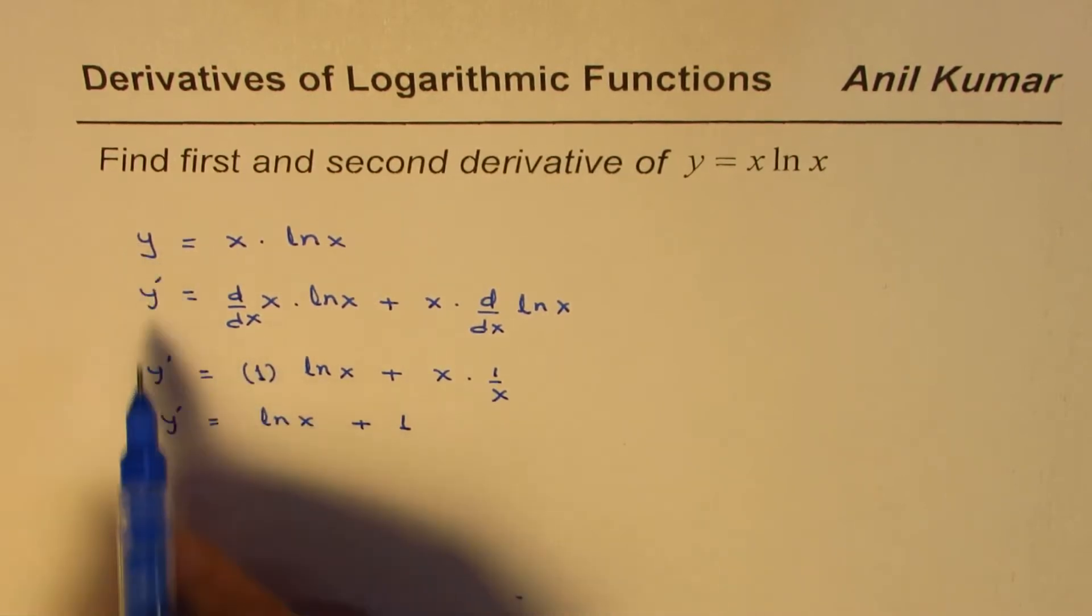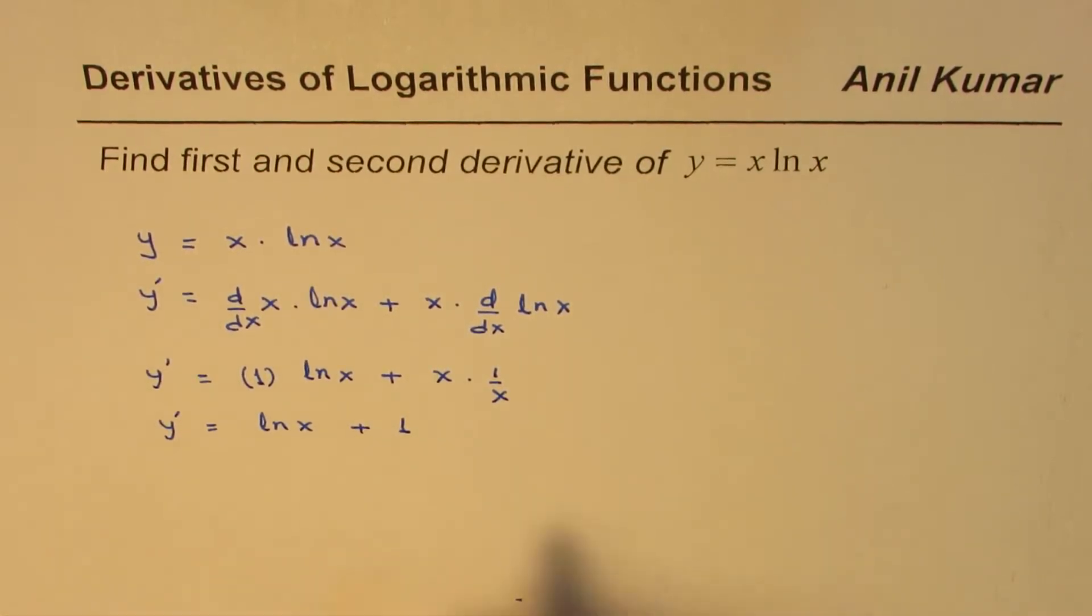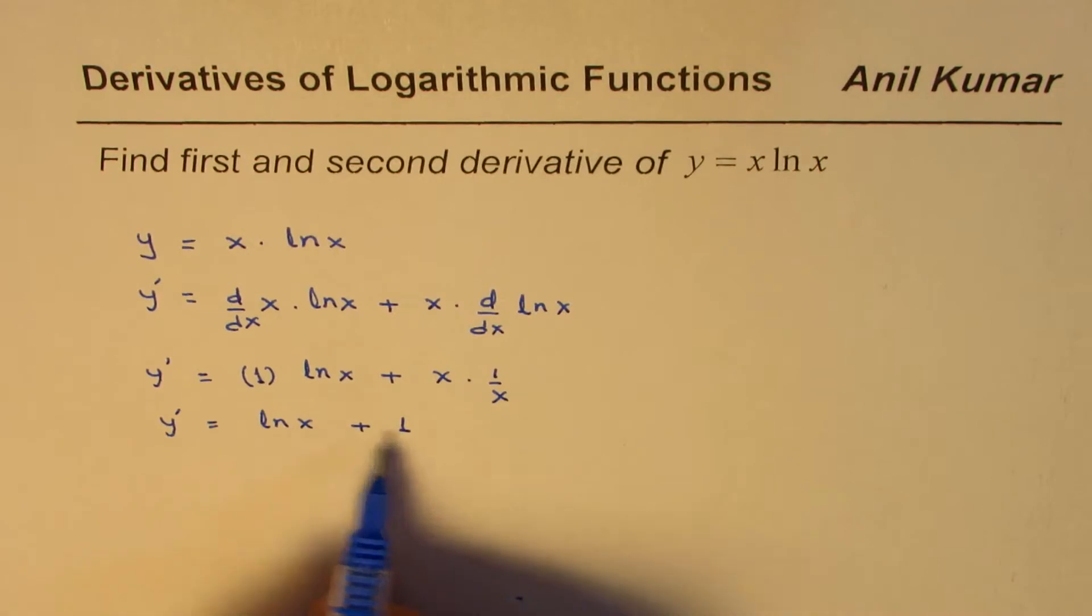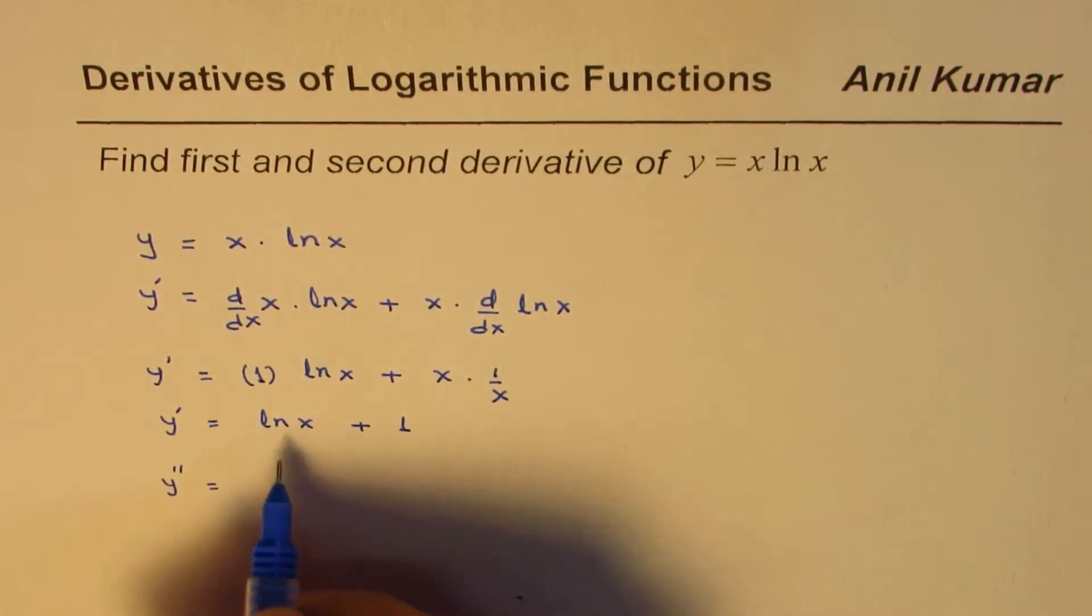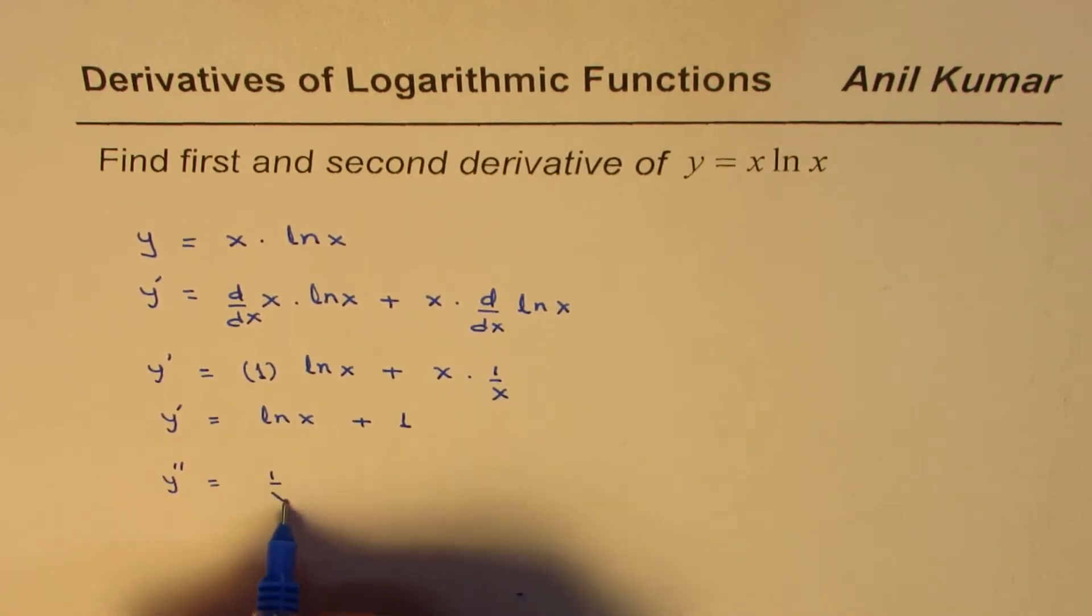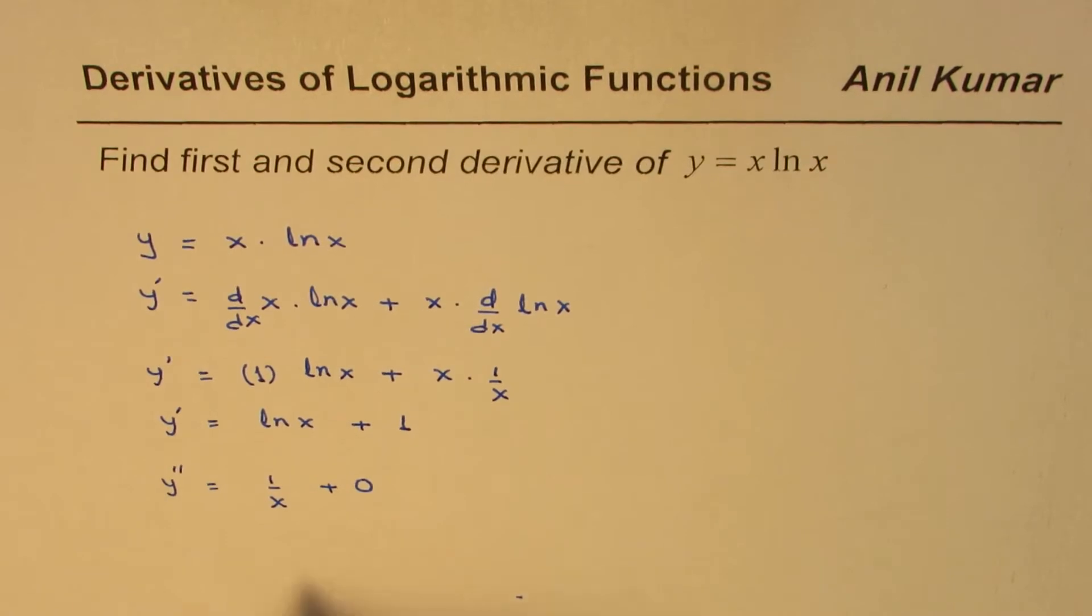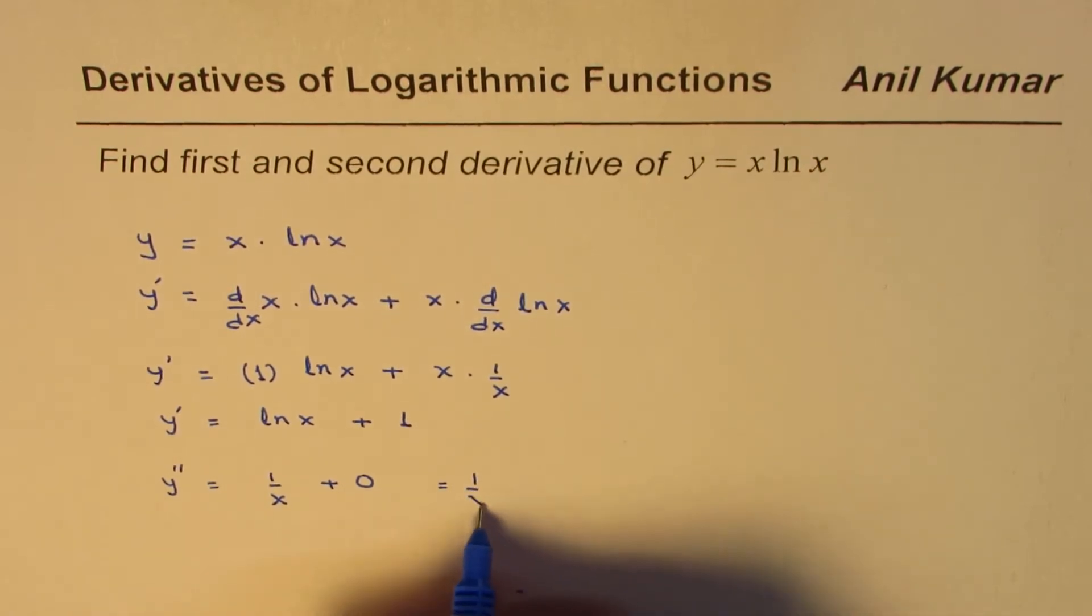You write this as dy dx also. Now the second derivative is derivative of this function, which will be, derivative of ln x as you know is 1 over x and derivative of 1 is 0. So the derivative is equal to 1 over x.